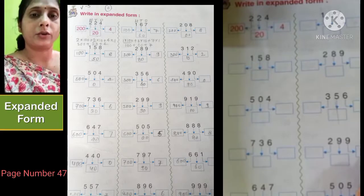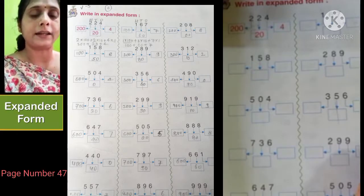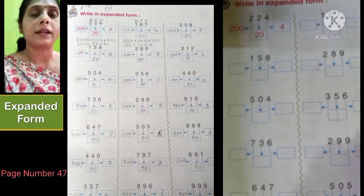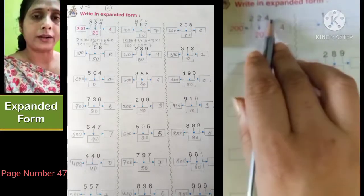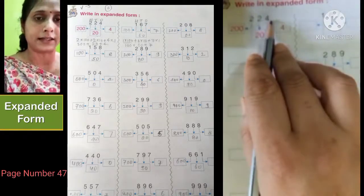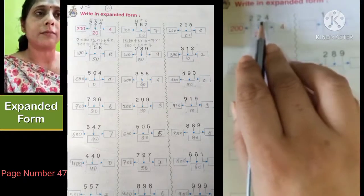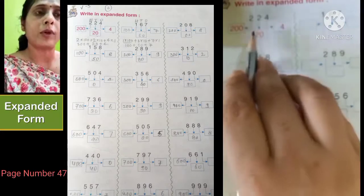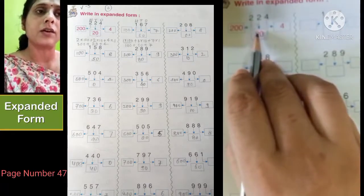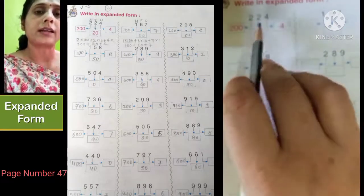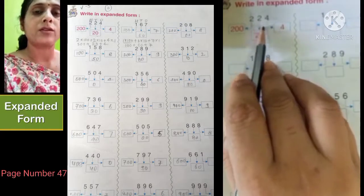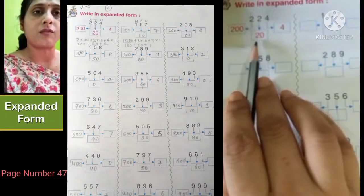Please open your book to page number 47. The question is write in expanded form. The number is a three digit number. We have learned different three digit numbers, and we have to expand these numbers. Expansion of a number means writing the place value of different digits of a number and adding these numbers.